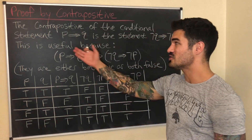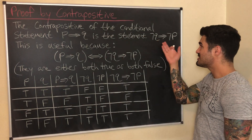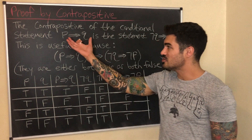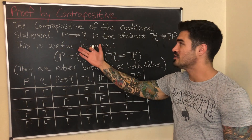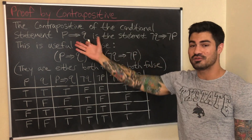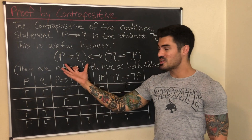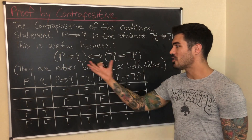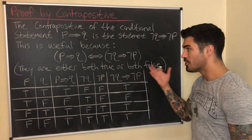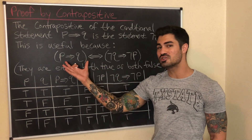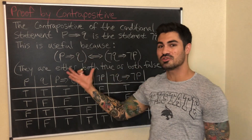The contrapositive of the conditional statement P implies Q is the conditional statement: the negation of Q implies the negation of P. So if I have a conditional statement, I can write the contrapositive as the negation of the conclusion implies the negation of the premise. This is really useful because a conditional statement and its contrapositive are what we call logically equivalent — they're either both true or both false.